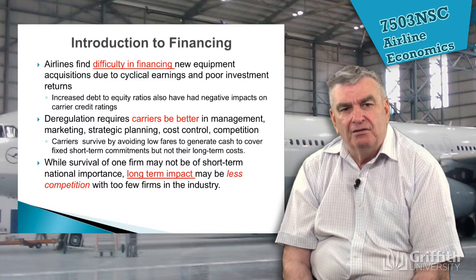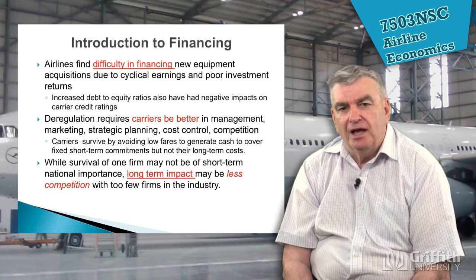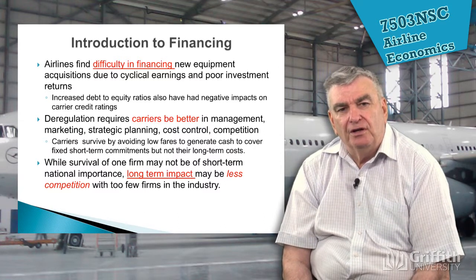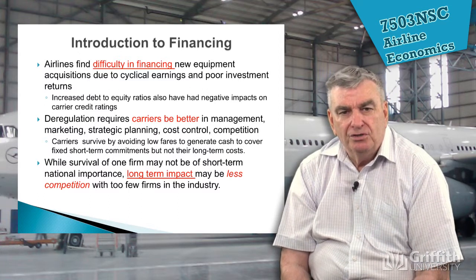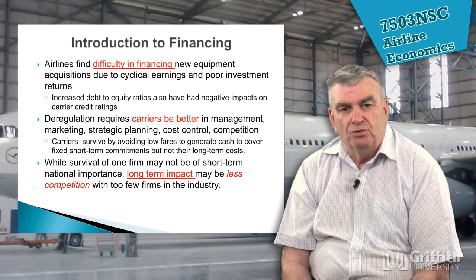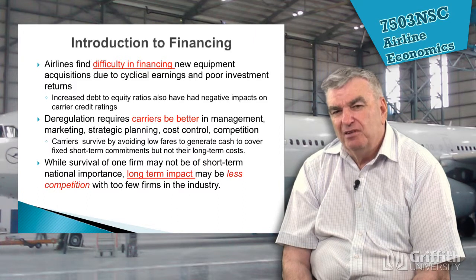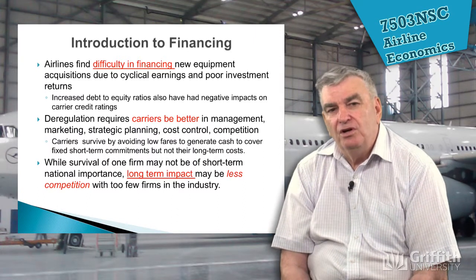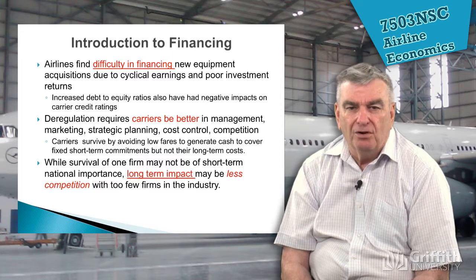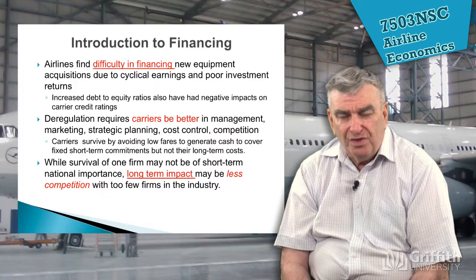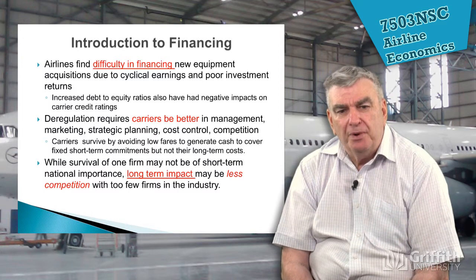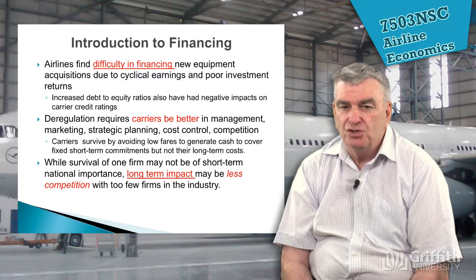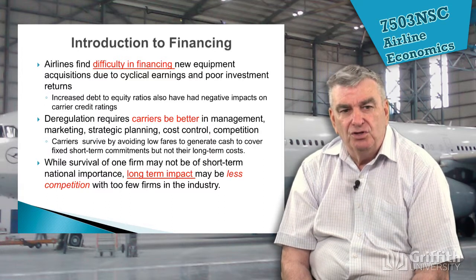Aviation economics is like our own lives. Just as we find difficulty sometimes in financing large purchases, airlines find the same difficulty in coming up with new equipment. The more they have to borrow, the more their debt to equity ratio changes, making it harder to get finance in the future. It's like going to the bank with a lot of existing debts — the bank sees you as a poor risk. Airlines are exactly the same, and banks take the same attitude with airlines as they do with individual borrowers.